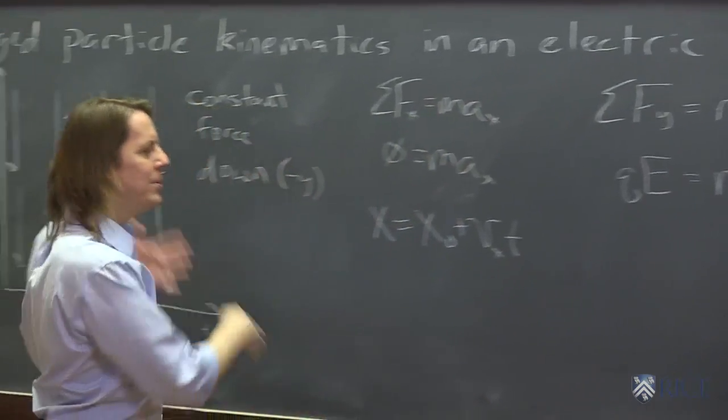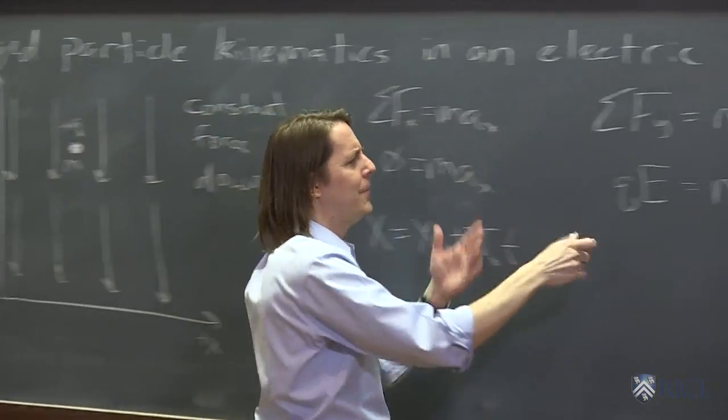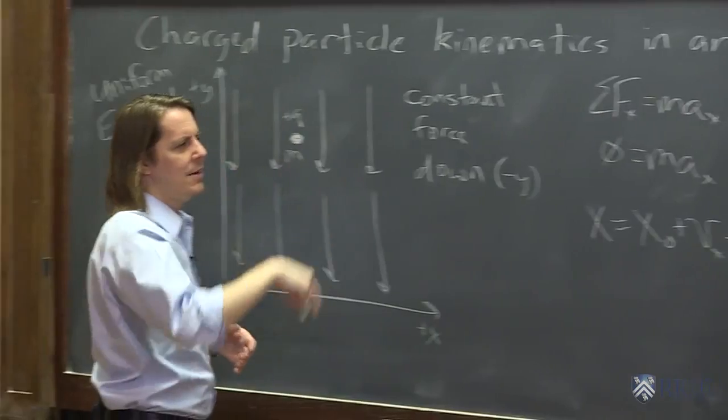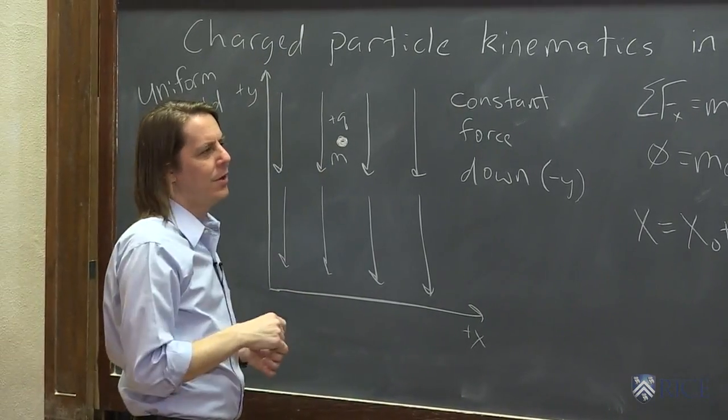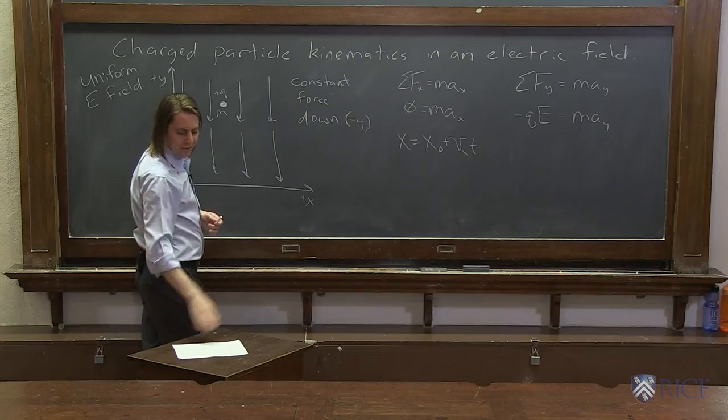But if we wanted to do it in this coordinate system, it would be negative, right? Because E is negative. So we're not writing the vector part. I'll just put the negative on it. QE would point down in the negative y direction, because we're assuming q is positive. So we could write it that way.